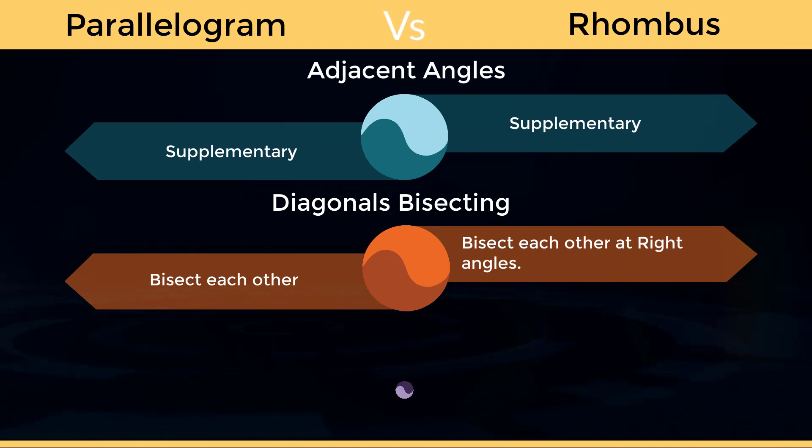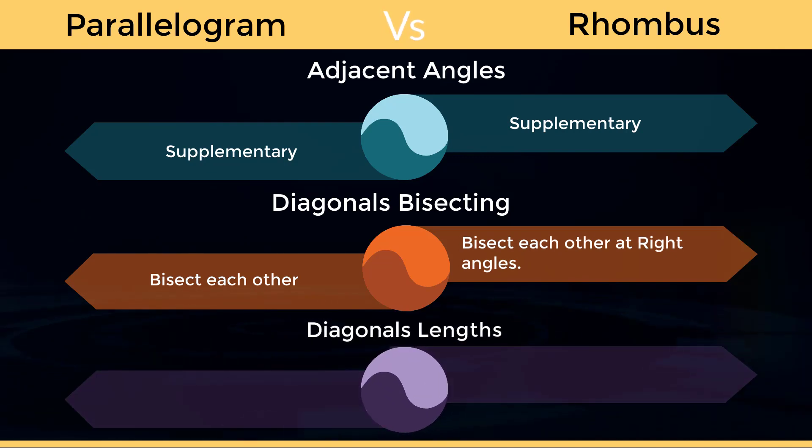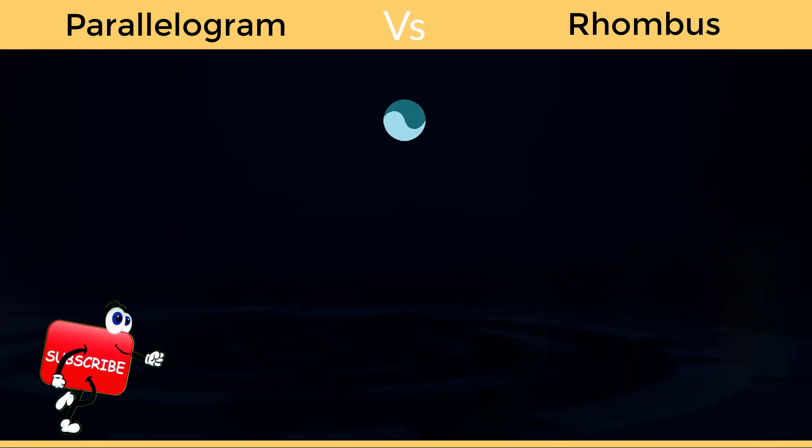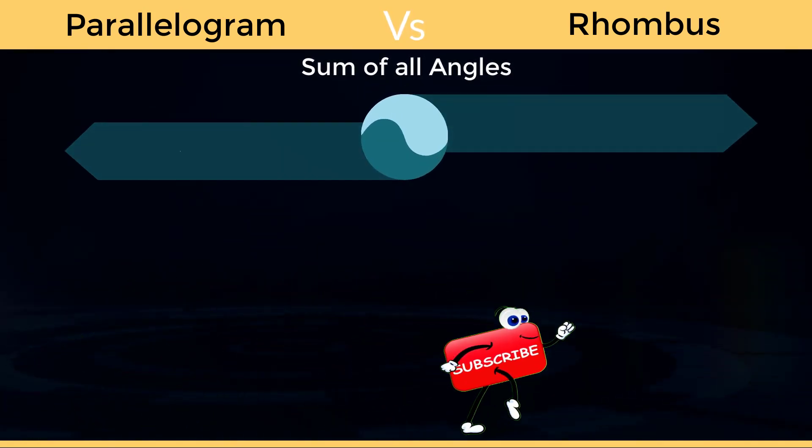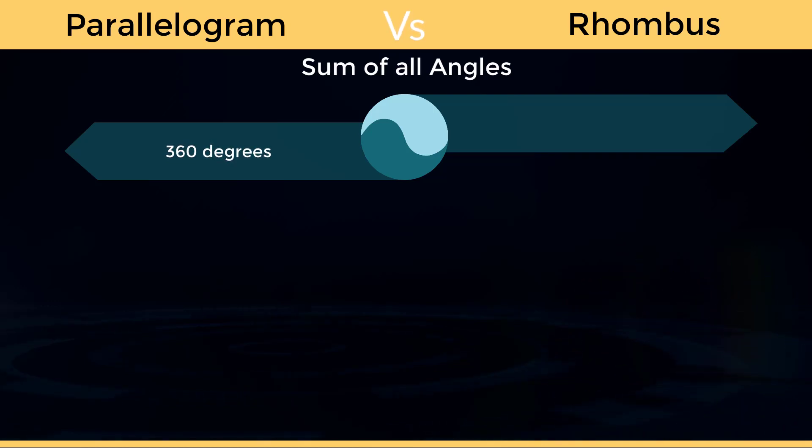Diagonals of rhombus bisect at right angles. Diagonals length of parallelogram are not equal. Diagonals length of rhombus are not equal. Sum of all angles in parallelogram is 360 degrees.